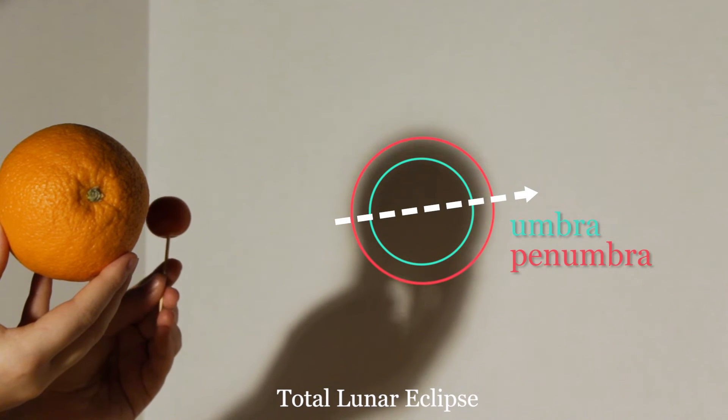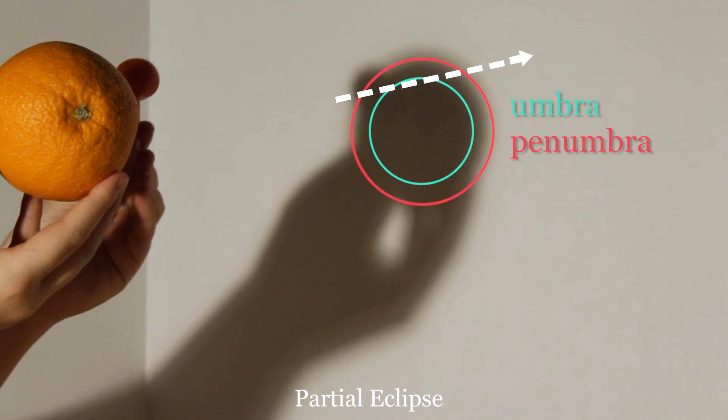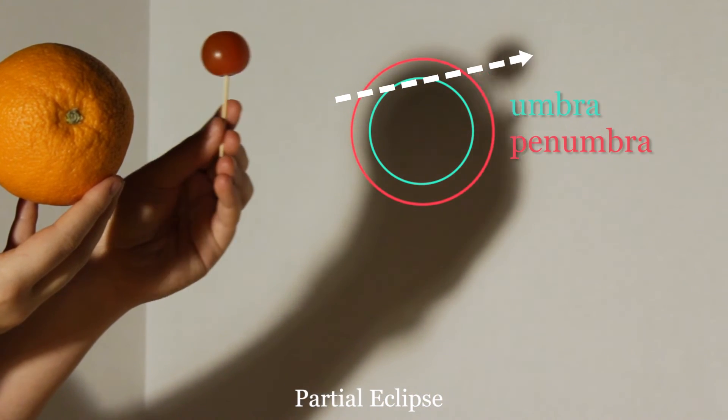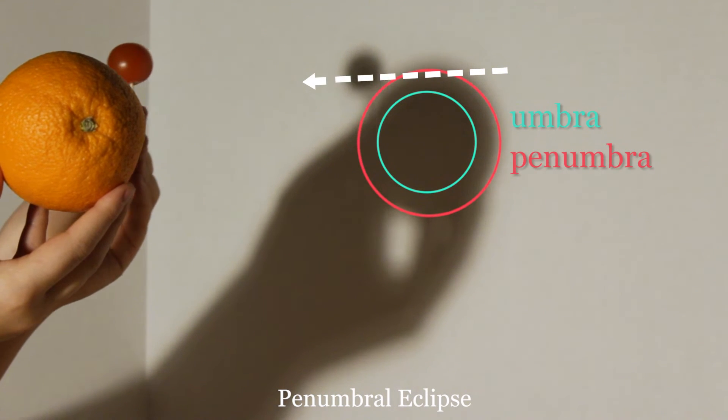It is possible to show a total lunar eclipse as the tomato passes completely through the umbra, a partial eclipse where only a portion of the tomato passes through the umbra, and a penumbral eclipse as the tomato passes only through the penumbra.